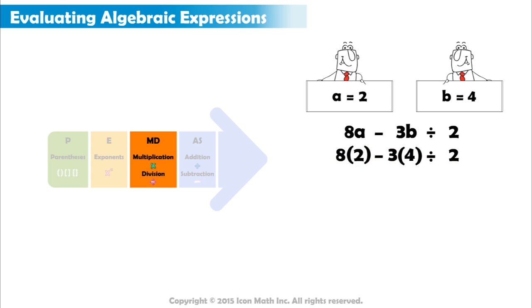The third step is to perform any multiplication or division in order from left to right. The first multiplication in this expression is 8 multiplied by 2. 8 times 2 equals 16.